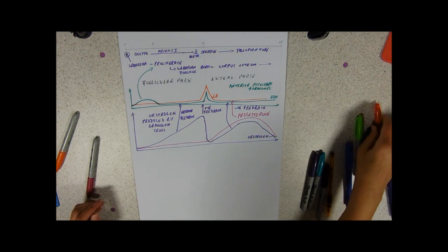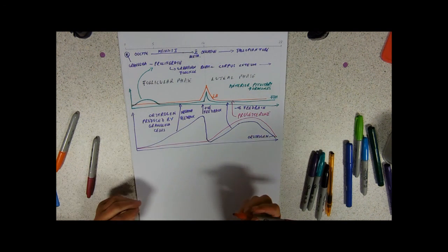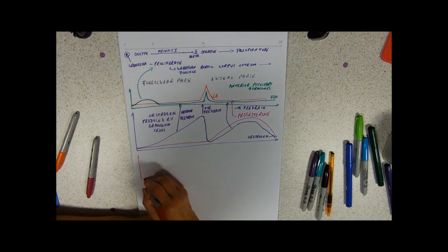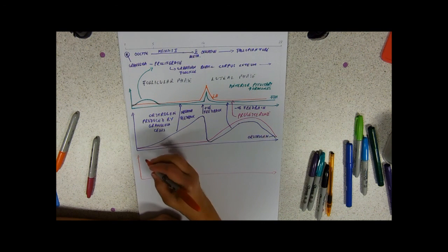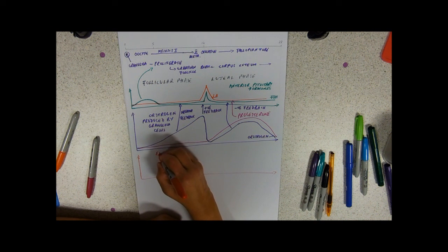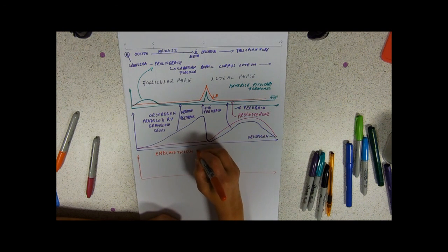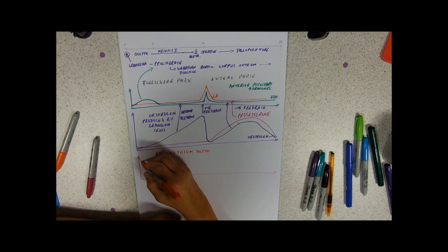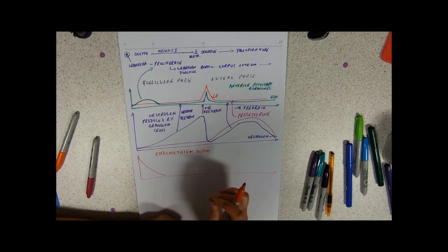So the effect of these hormones tends to be on the uterus. Day zero is always the first day of menstruation, so this is when the endometrial lining is shed. It's what we call a period, menstruation if you're going to be posh, and therefore the endometrium depth is going to get less and less and less.